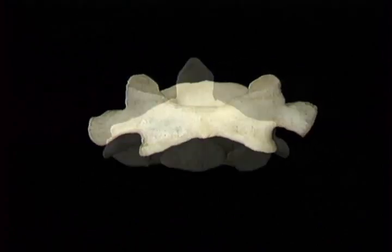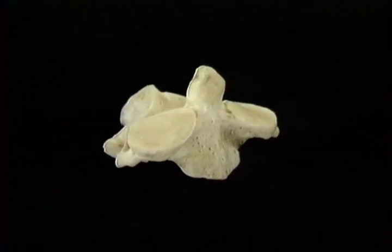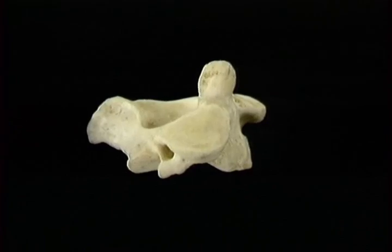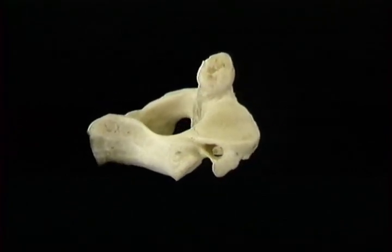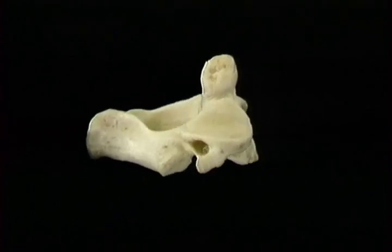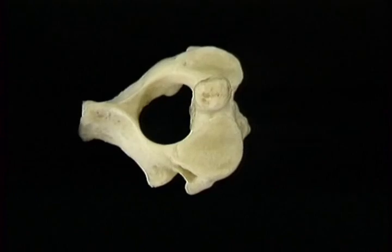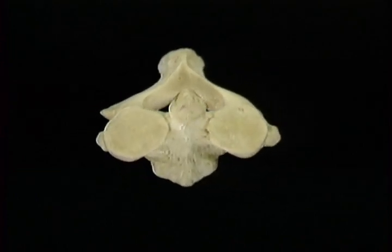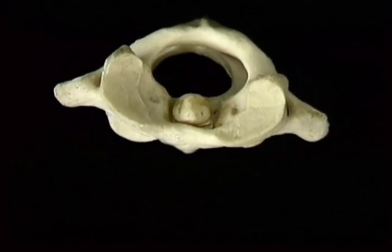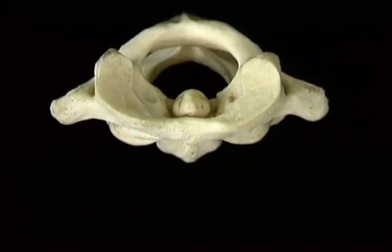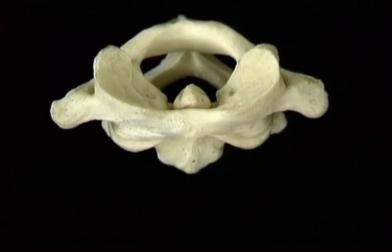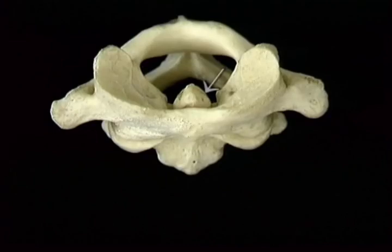Now let's look at the axis vertebra. The body of the axis is prolonged by this important projection, the odontoid process. In terms of development, the odontoid process represents the missing body of the atlas. In terms of function, it's the pivot around which the head, together with the atlas, rotates. The upper articular surfaces of the axis are placed well in front of the lower ones and are in a straight line with the odontoid process. As rotation occurs between these surfaces and those of the atlas, the odontoid process stays in the middle. The odontoid process is surrounded in front and on each side by bone. It's held in place behind by a strong ligament, the transverse ligament of the atlas. The odontoid process is also held in place from above by two strong ligaments, the alar ligaments, which are attached here and here.